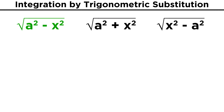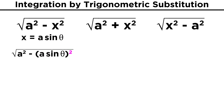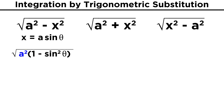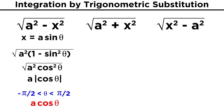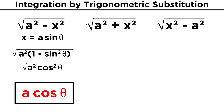Take this first example with a squared minus x squared under the radical. Let's allow x to equal a sine theta. If we plug that in for x, the exponent distributes, and we get a squared minus a squared sine squared theta. Since we have a squared in both terms, let's factor that out to get a squared times the quantity one minus sine squared theta. We know from our Pythagorean identities that one minus sine squared theta is cosine squared theta, so we make that change, and we are left with a perfect square. Taking the square root, we are left with a times the absolute value of cosine theta. If we take the interval of theta as being between negative half pi and half pi, cosine theta will be positive, so we can lose the absolute value, and we are left with a cosine theta.